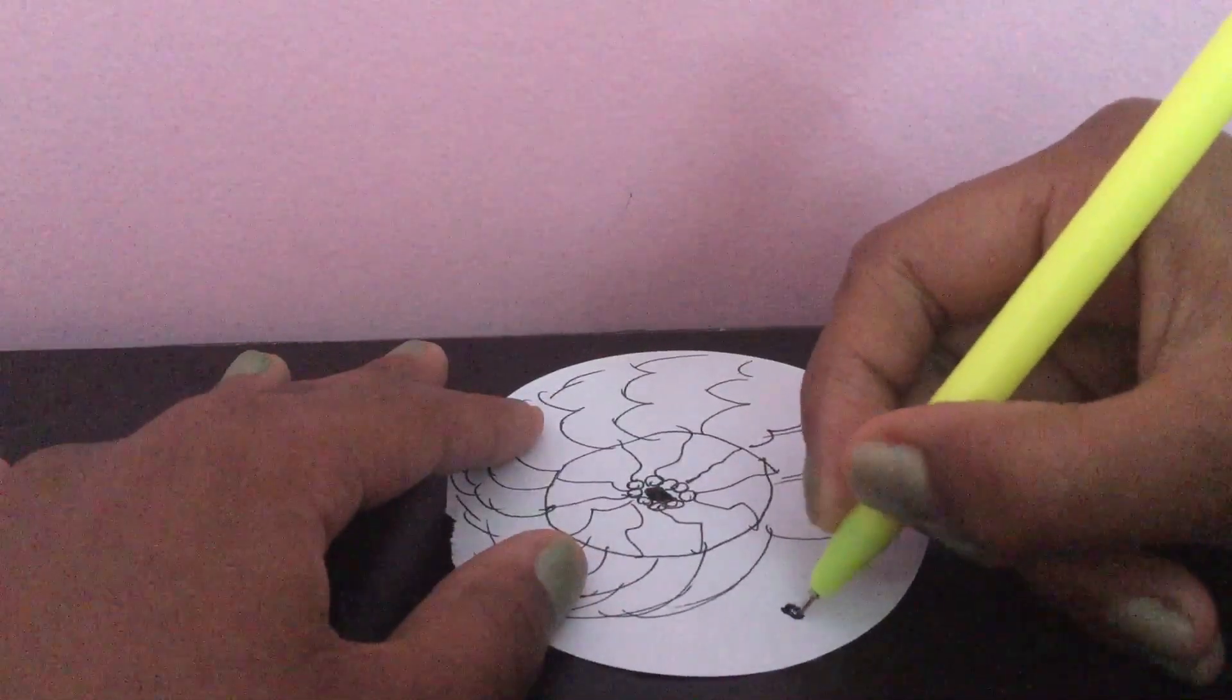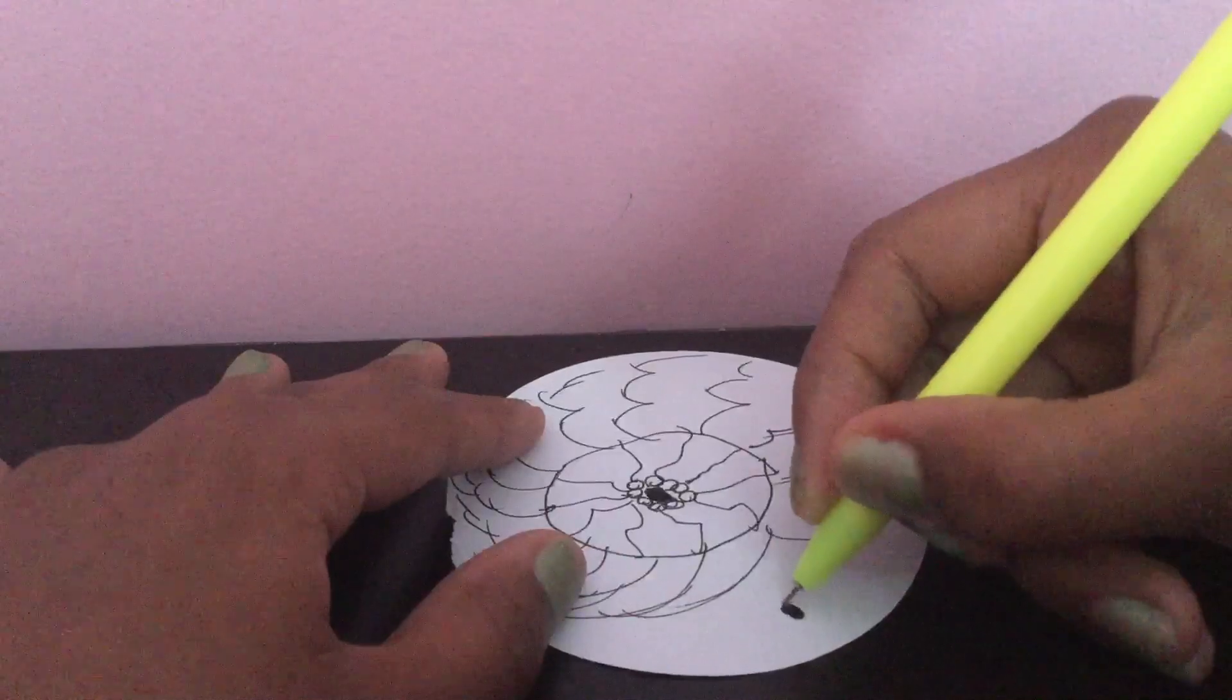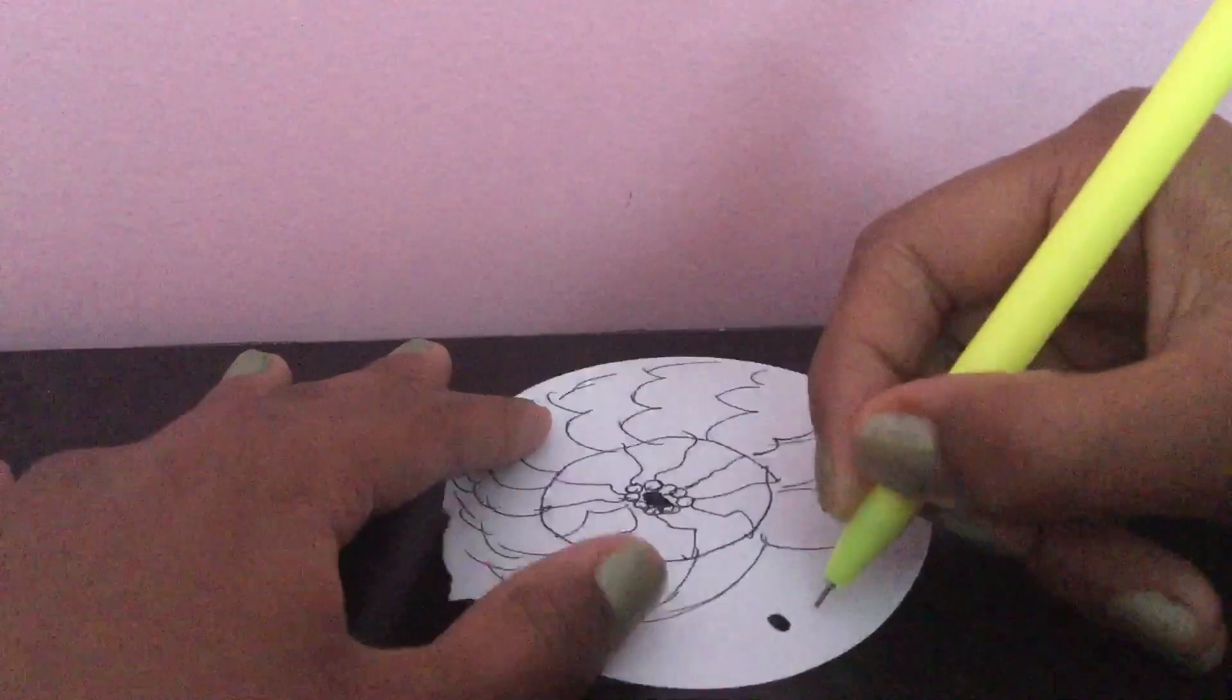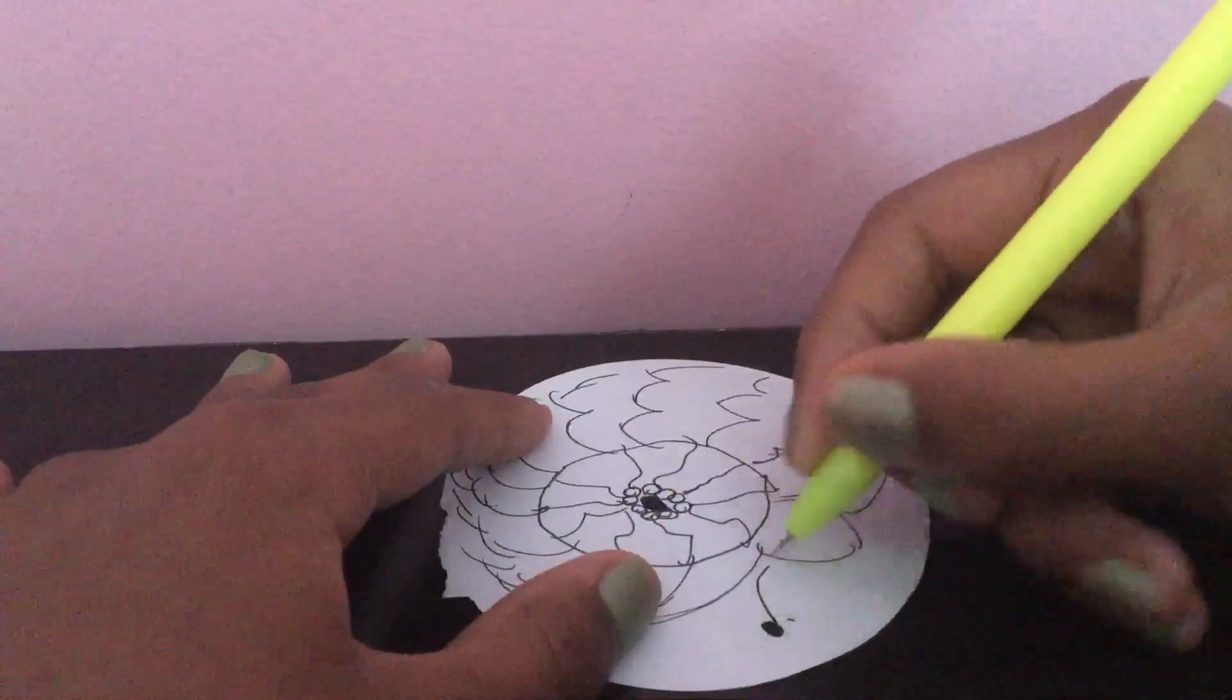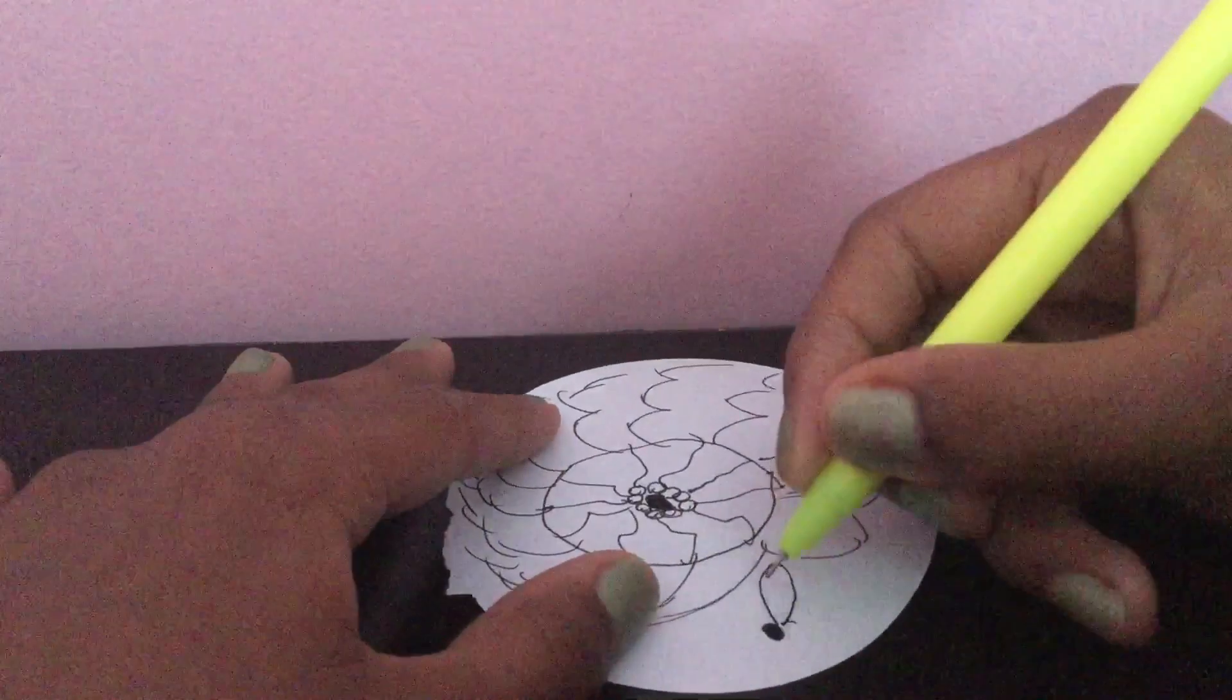Now let's just decorate this part. Since we made a circle, now let's make a flower.